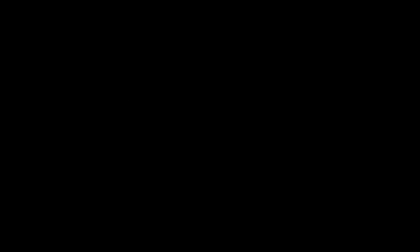But before we do that, we should understand what the dot product is. The definition of the dot product is that given two vectors u and v, they'll have n different components, which means they'll have an x component, a y component, and then a whole host of other components until you come to the nth component of the vector.